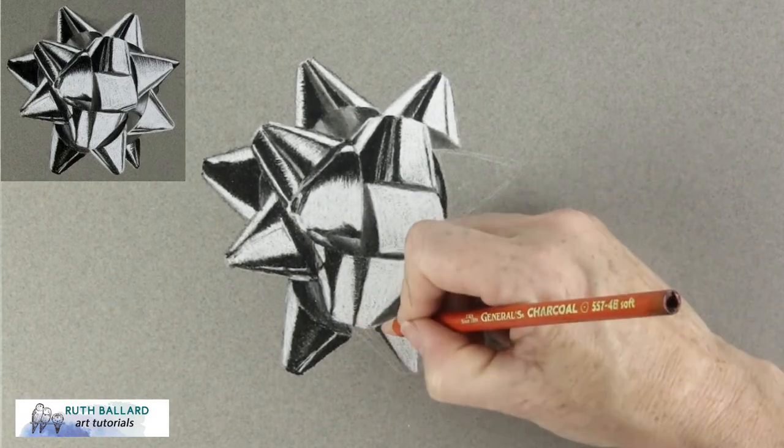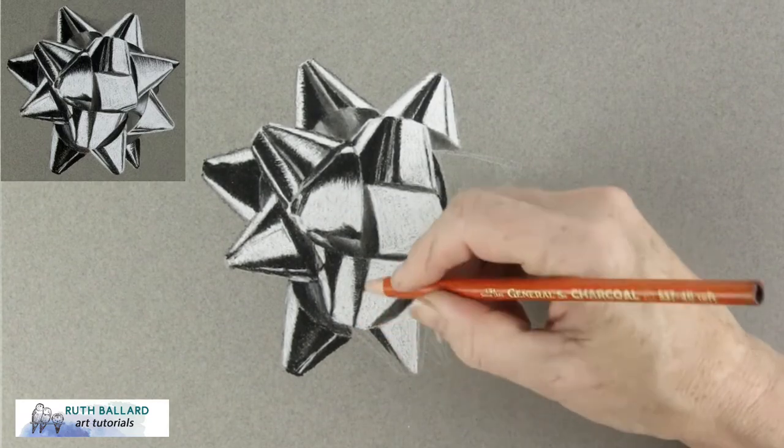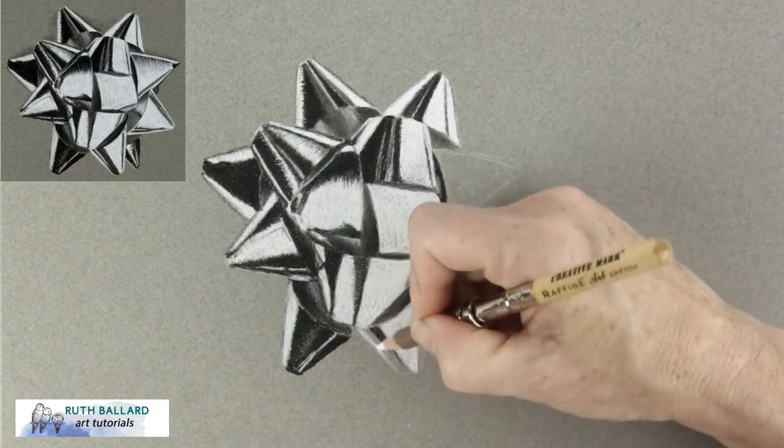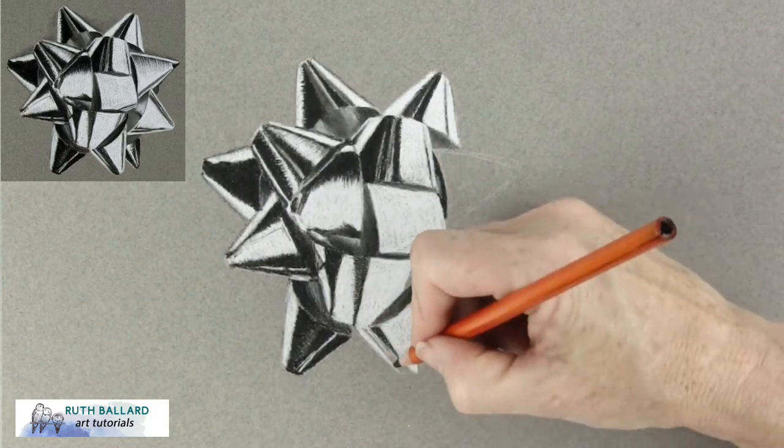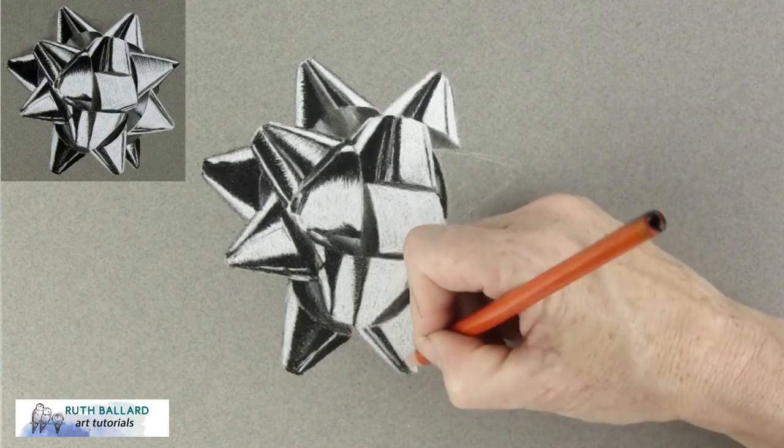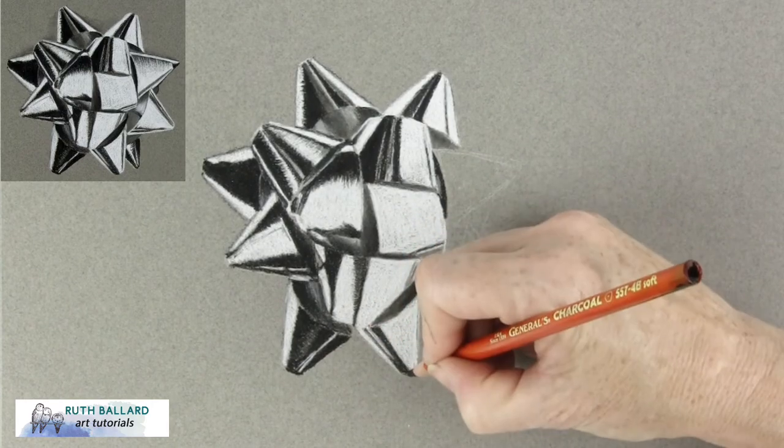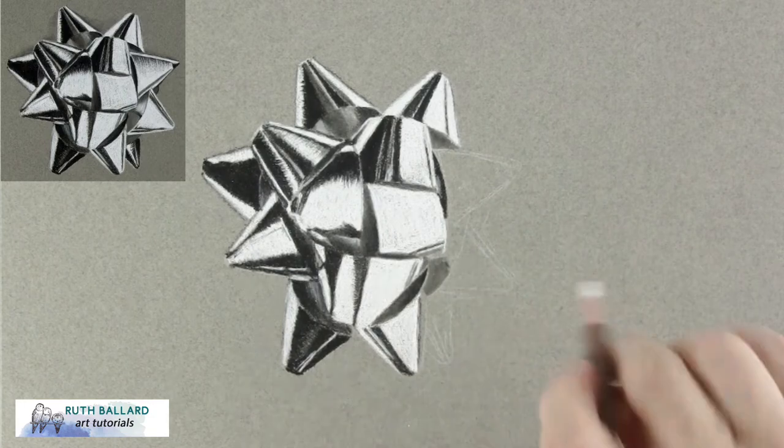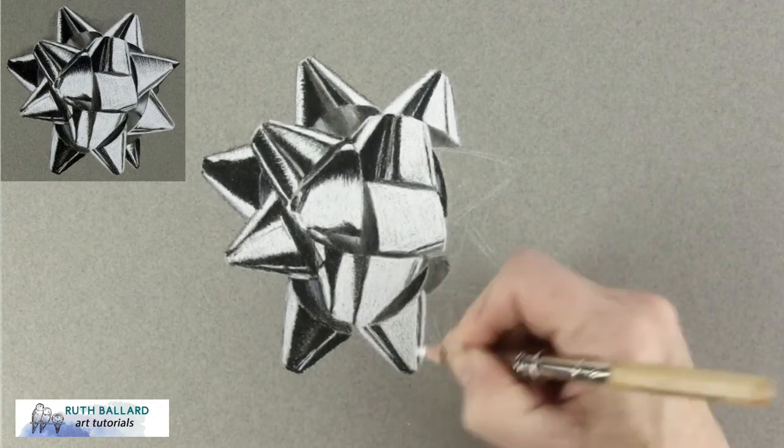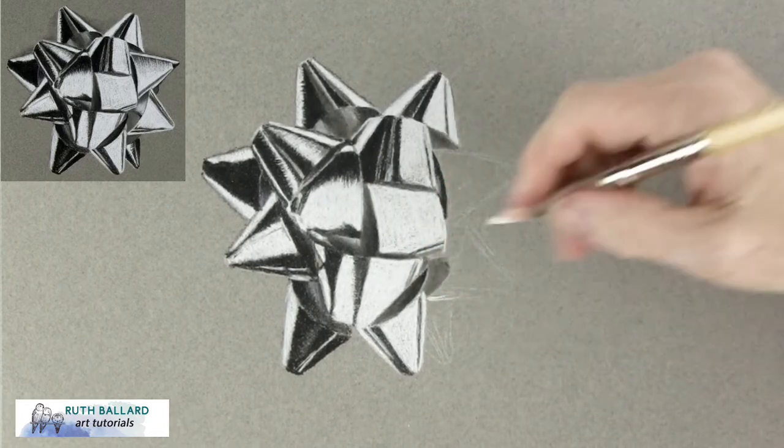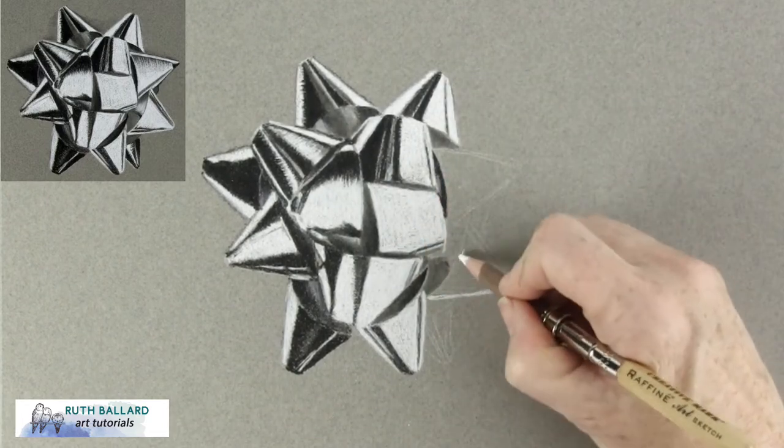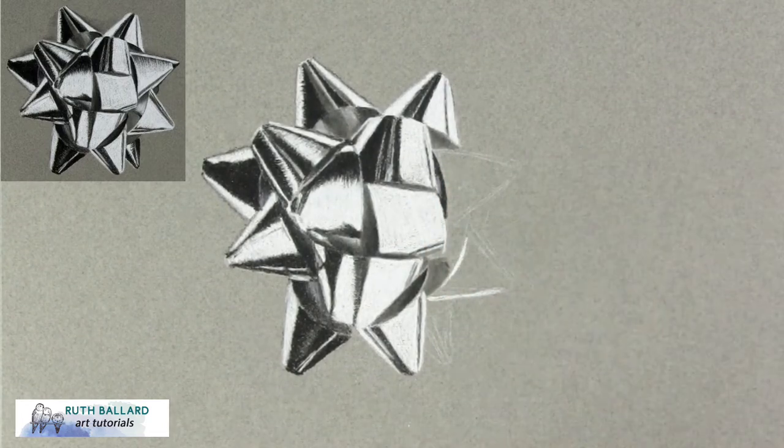Take a look at the reference and notice the light source. The light's coming in from the right hand side so the bow is much lighter there. Noting this and using more white charcoal there adds to the realism in the drawing. I'm also using more lighter greys and I'm smoothing out my white areas and using less and less of the black charcoal.